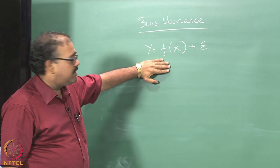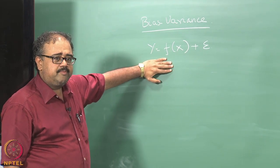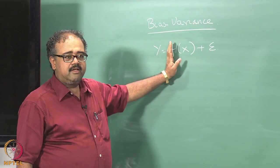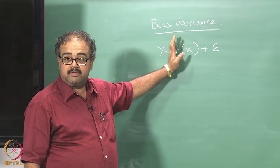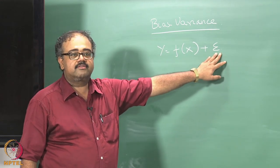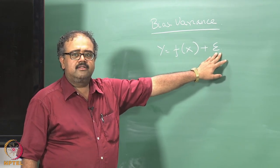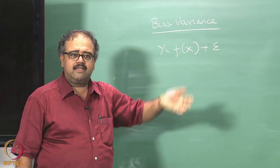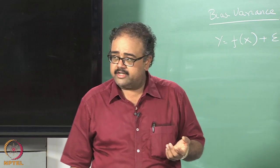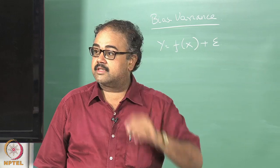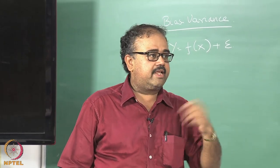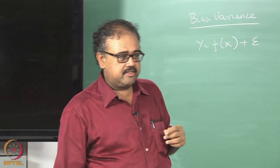I am going to assume that your actual data is being generated by a system of this form. There is a function f which is what you are trying to learn about, but the data that is given to you — the Ys that are given to you — are actually corrupted by some kind of noise. If you remember last class, we were talking about a joint distribution over Y and X. I said there is some joint distribution over Y and X; you do not know what the joint distribution is, you are only given samples drawn from that distribution.